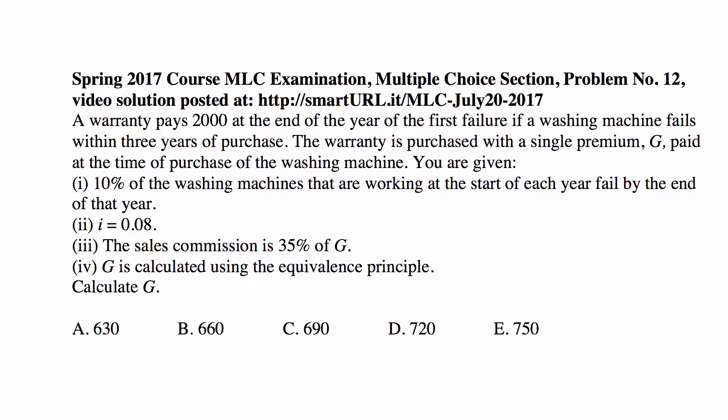Here's a problem from the Spring 2017 Exam MLC, problem 12 in the multiple choice section. A warranty pays $2,000 at the end of the year of the first failure if a washing machine fails within three years of purchase. The warranty is purchased with a single premium G paid at the time of purchase. You are given that 10% of the washing machines that are working at the start of each year fail by the end of the year — meaning 90% continue to work.